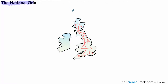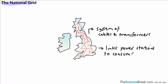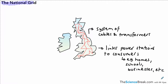Hello, today we're going to have a quick look at what's called the National Grid. Before we do that, let's just figure out what we mean by the National Grid. Firstly, it's a system of cables and transformers which link the different parts of the country. It links power stations to consumers — that's basically you and I, in our homes, but also to schools and businesses and all the other places that need a supply of electricity.